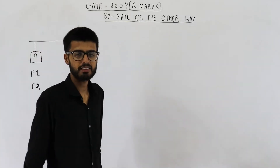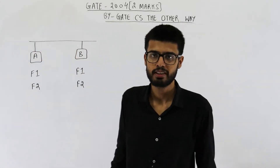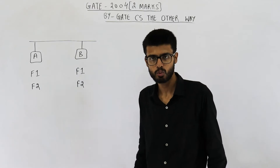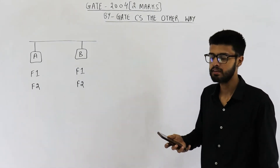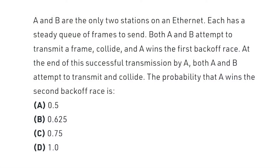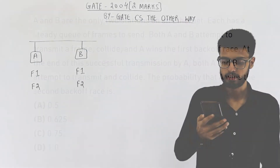Hello students, welcome back. The question is from the GATE 2004 exam, worth two marks. A and B are the only two stations on an Ethernet, each with a steady queue of frames to send. Both A and B attempt to transmit a frame, collide, and A wins the first back-off race. At the end of this successful transmission by A, both A and B attempt to transmit and collide again. The question asks for the probability that A wins the second back-off race.